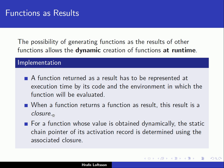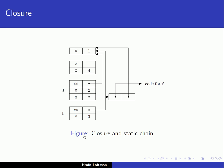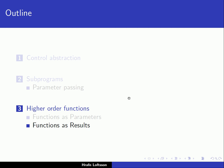Remember, the closure is the pointer to the code for the function and a pointer to the activation record that holds information about the non-local environment. So for a function whose value is obtained dynamically, the static chain pointer of its activation record is determined using this closure — just as we saw earlier. The closure is a pointer to code, and the second component is a pointer to an activation record.